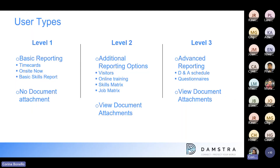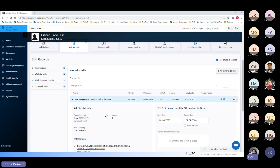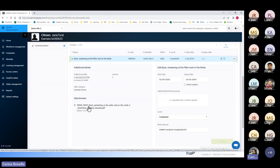We then move up to level two users. Level two users will have additional reporting options — they'll still be able to see time cards, on-site now, and basic skills reports, but they'll also be able to run reports on visitors, online training, view skills matrices, and view job matrices. They'll also be able to view document attachments, meaning they can expand on skills and go in and look at those attachments.